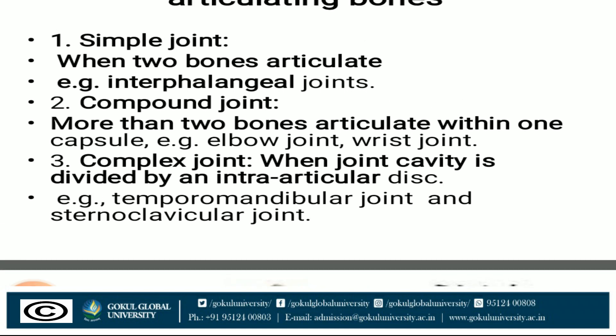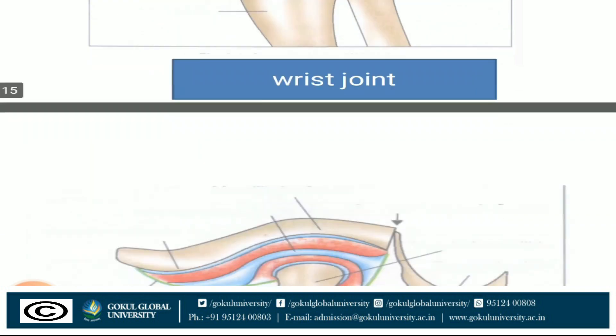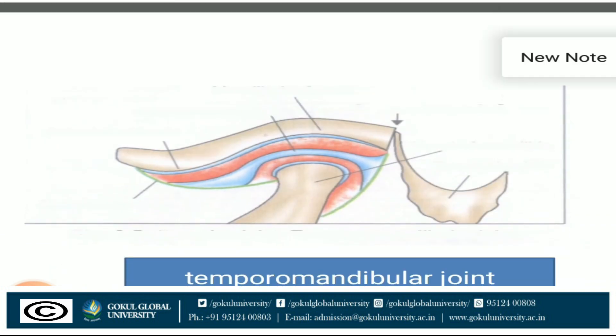A complex joint is when the joint cavity is divided by an intra-articular disc. Examples are the temporomandibular joint (TMJ) and the sternoclavicular joint. The diagram shows the TMJ divided into upper and lower portions by the intra-articular disc.